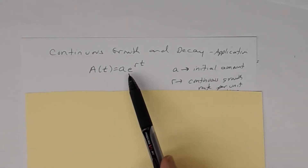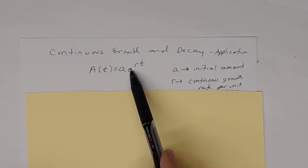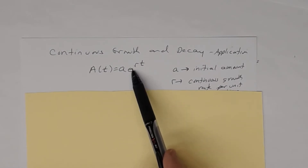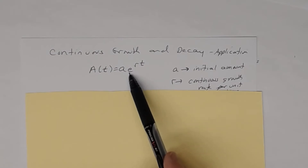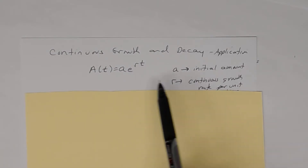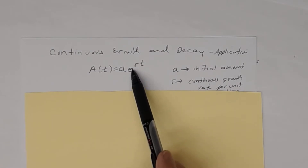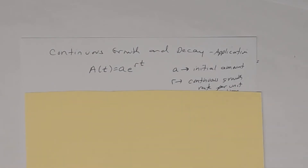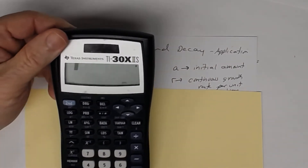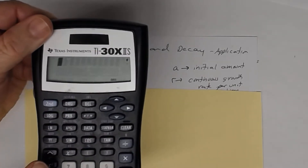In previous lessons you used e when you saw the word 'continuous investing.' So if a problem uses the word 'continuous growth,' you're going to use e. Remember e is an irrational number approximately equal to 2.718. Make sure you know where it is in your calculator.